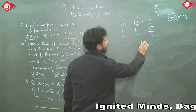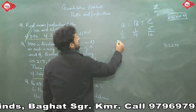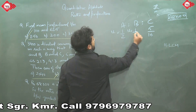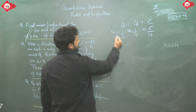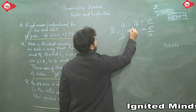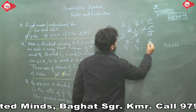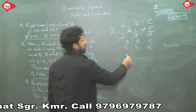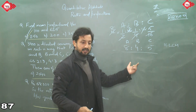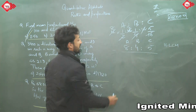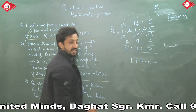The LCM of the denominators is 16. Multiply all fractions by 16: A's share = 1/2 × 16 = 8, B's share = 1/4 × 16 = 4, C's share = 5/16 × 16 = 5. So A:B:C = 8:4:5. Total parts = 8 + 4 + 5 = 17 parts.